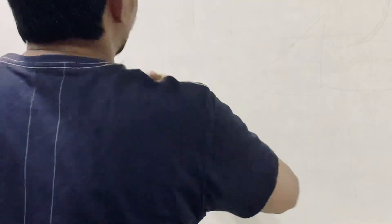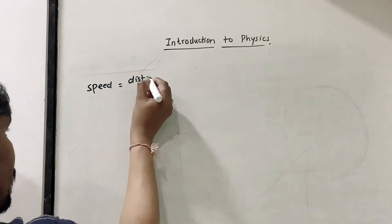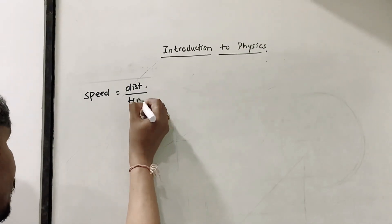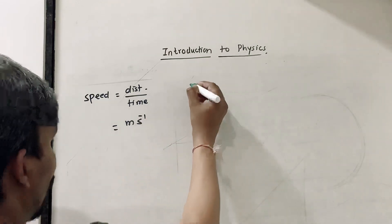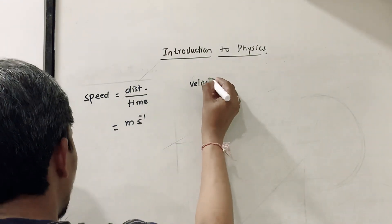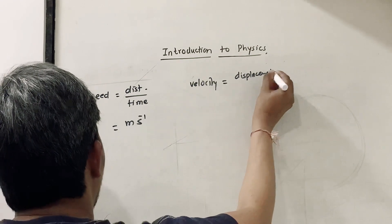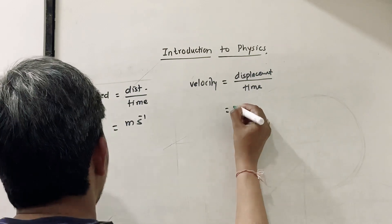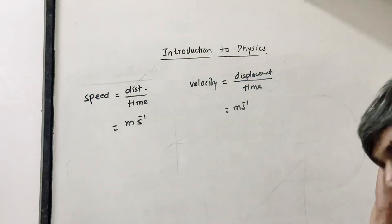Speed is distance divided by time, and its SI unit is meter per second. Velocity is displacement divided by time, and its SI unit is also meter per second. However, speed is a scalar quantity while velocity is a vector quantity.